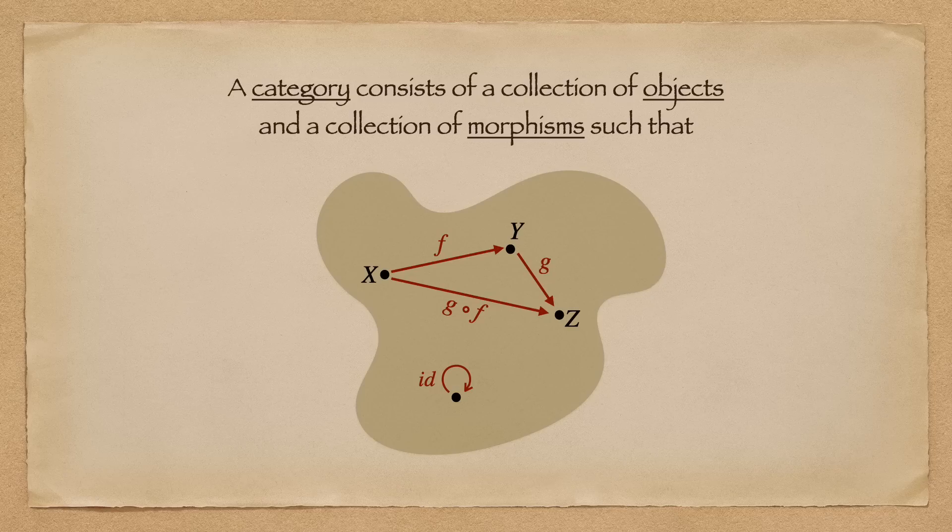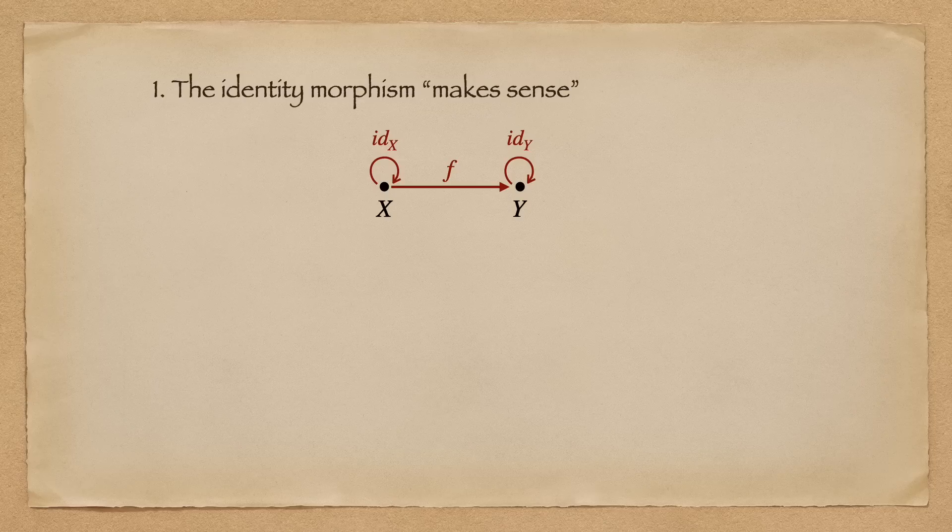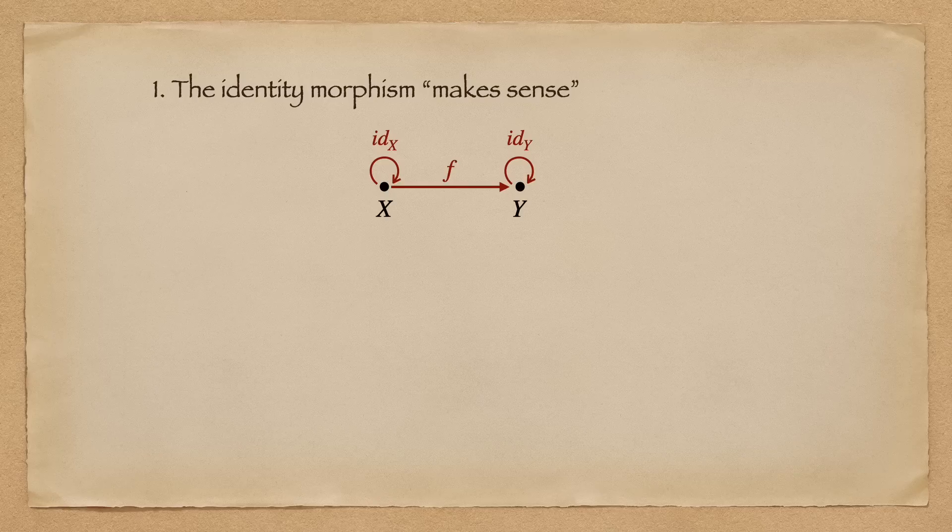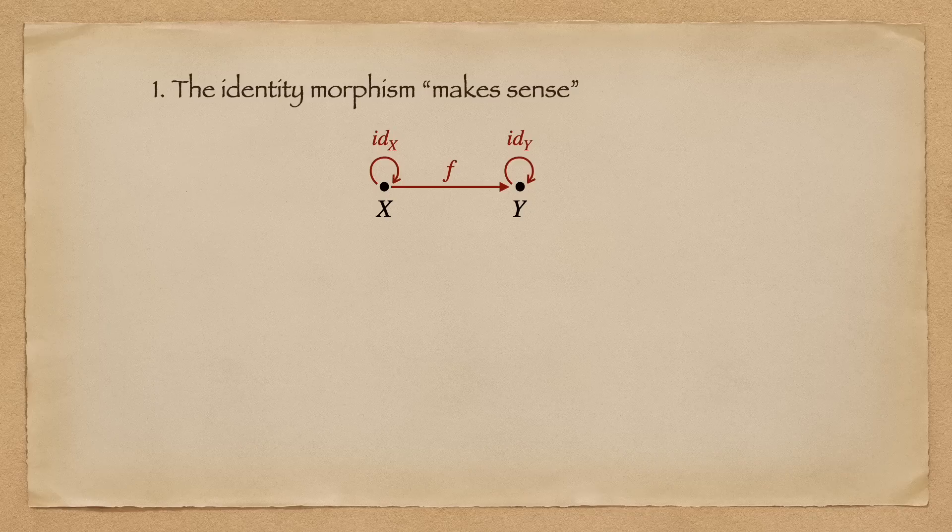we have two axioms. The identity morphism makes sense. In other words, taking the identity morphism on x and then f should be the same as taking f and then the identity morphism on y. They should both equal to just f.